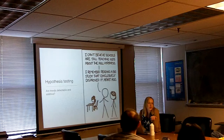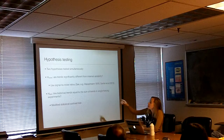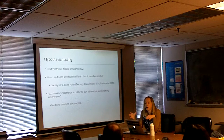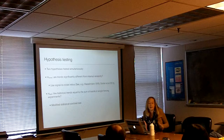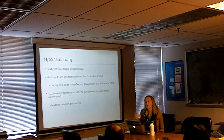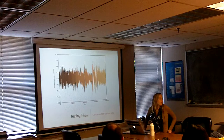I'm going to test two hypotheses simultaneously because they're easy, and why not? The first hypothesis is what I call H-noise: are the trends that we see significantly different from internal variability? To do that, I'm going to use signal-to-noise ratios as defined in detection-attribution studies. Simultaneously, I'm going to test H-additive: are the historical trends equal to the sum of the trends in the single-forcing experiments? To do this, I'm going to use a modified statistical contrast test.